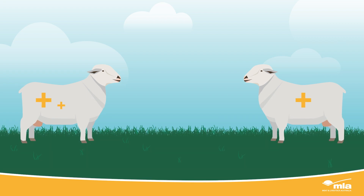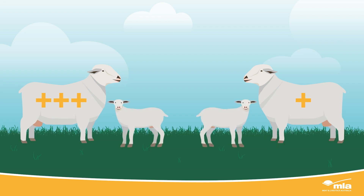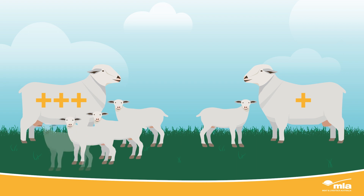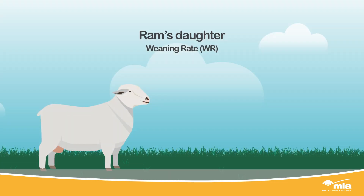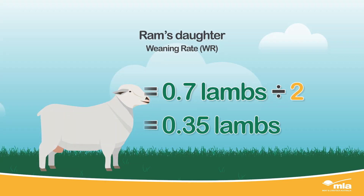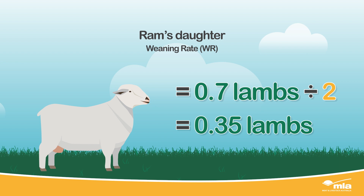A ram with a more positive value will produce daughters that on average have a higher percentage of lambs weaned at each lambing opportunity. In our example, the ASBV for this ram's number of lambs weaned is 0.7. Since only half his genetics will be passed on to his progeny, his daughters will produce 0.35 more lambs compared to a ram with an ASBV of zero.